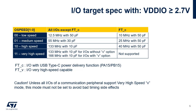This presentation does not provide the exhaustive list of all combinations; please refer to the datasheet. The table in this slide is relevant when the VDDIO power supply is greater than or equal to 2.7V. The first column contains the value to be programmed in the output speed field. The second column applies to all input/outputs except 5V-tolerant input/outputs with USB Type-C power delivery function. When very high speed is chosen, the very high speed capability of each IO must also be taken into account. Very high speed configuration should not be selected unless all input/outputs connected to a particular peripheral support this capability. The third column applies to 5V-tolerant input/outputs with the USB Type-C power delivery function.